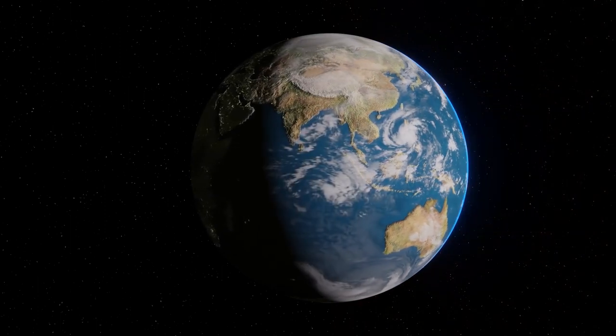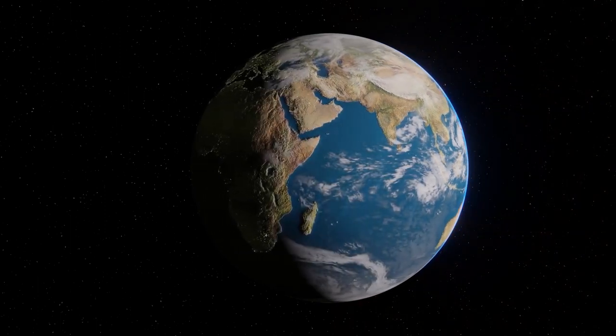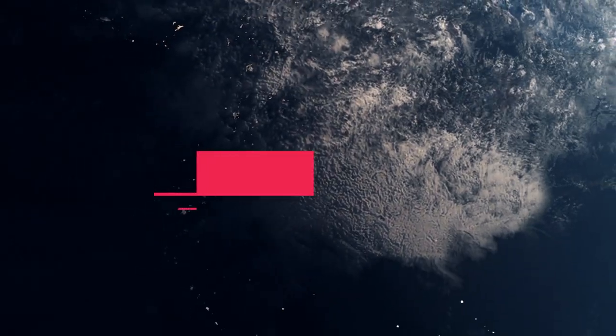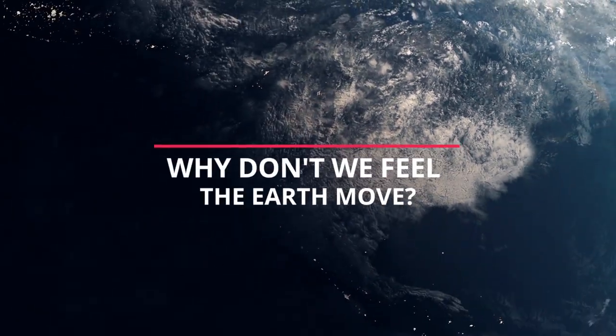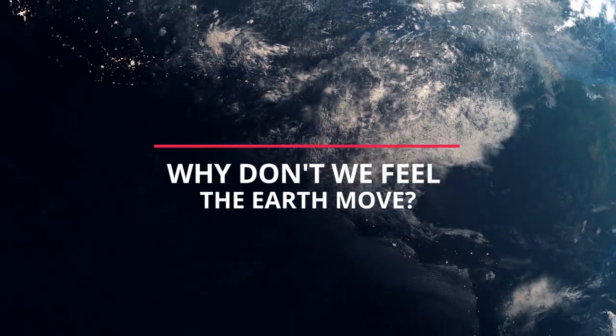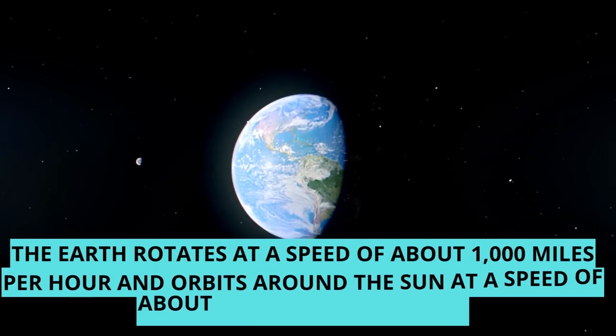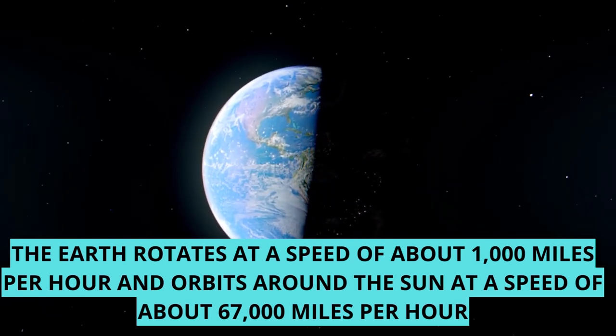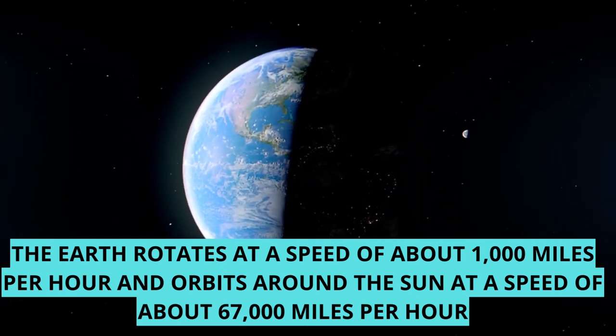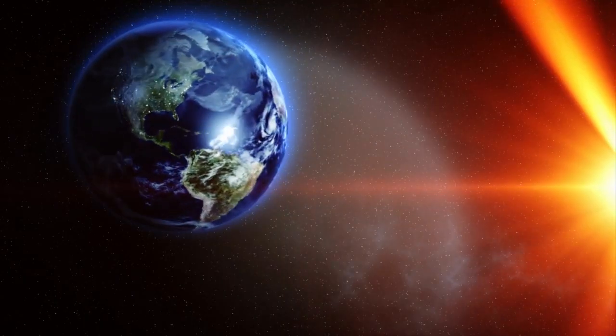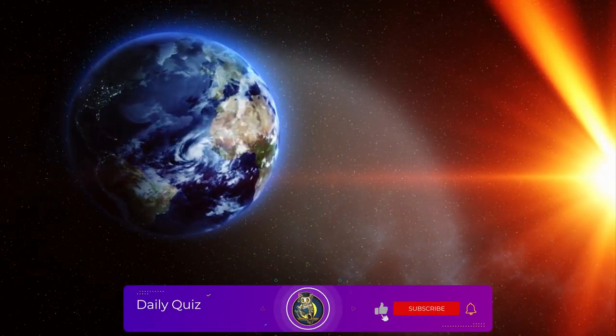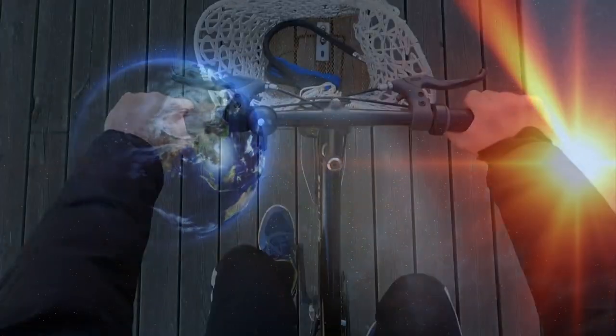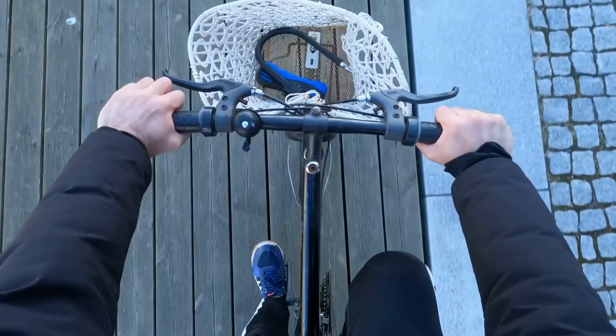The Earth takes one year to orbit the sun. Since it is 93 million miles away from the sun, it has to be moving extremely fast to cover this vast distance. Why don't we feel the Earth move? The Earth rotates at a speed of about 1000 miles per hour and orbits around the sun at a speed of about 67,000 miles per hour. The rotational and orbital speeds of Earth stay the same. Therefore, we do not feel any of this motion. We can only feel motion if our speed changes.